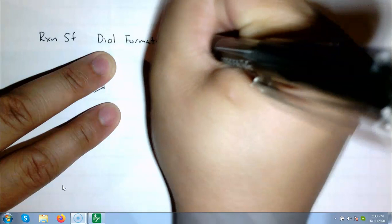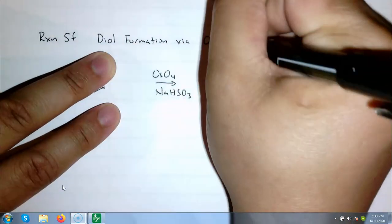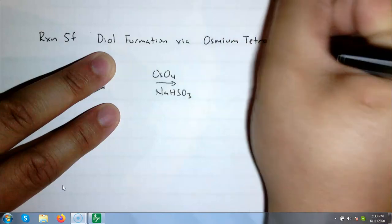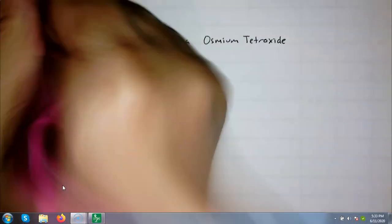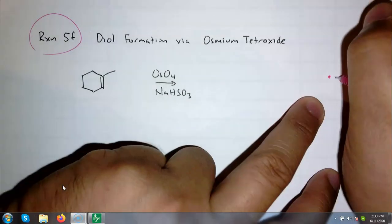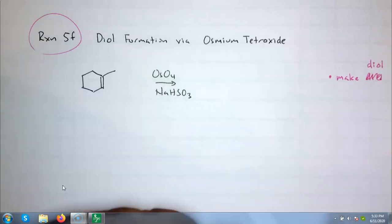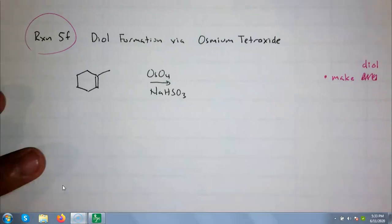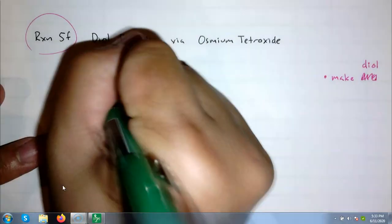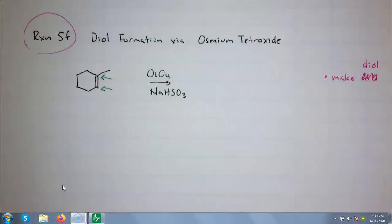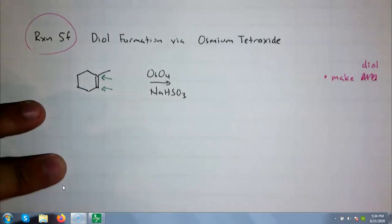And my reagents are going to be osmium tetroxide, osmium with four oxygens, OsO4, and NaHSO3. Both of these reagents are typically needed, but the oxygens that are making the molecule come from the osmium tetroxide. If you forget this second reagent, I probably won't take off any points. And I'll show you, I'll name it, and just from the name and a couple of details, I think some of you can draw me the product.